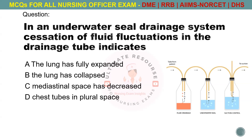In an underwater-seal drainage system, cessation of fluid fluctuations in the drainage tube indicates. Options are A. The lung has fully expanded, B. The lung has collapsed, C. Mediastinal space has decreased, D. Chest tube in pleural space. The answer is: the lung has fully expanded.